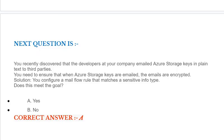Question: You recently discovered that the developers at your company emailed Azure storage keys in plain text to third parties. You need to ensure that when Azure storage keys are emailed, the emails are encrypted. Solution: You configure a mail flow rule that matches a sensitive info type. Does this meet the goal? Options are yes or no. Correct answer is yes.